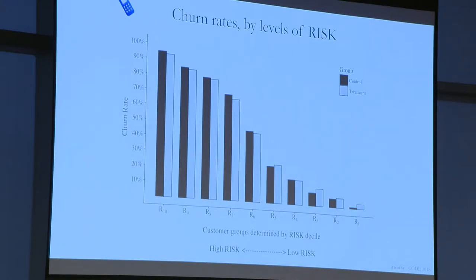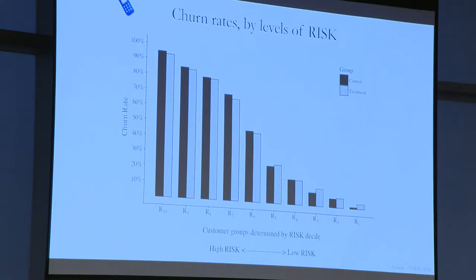Now the key question is: are the high-risk customers those who have the highest sensitivity to the intervention? What I really want to know is whether the difference between churn rate among control and churn rate among treated people is high. If you look at the highest-risk people, indeed you reduce churn by about 2%, versus at the very end of the spectrum, it's actually the opposite.